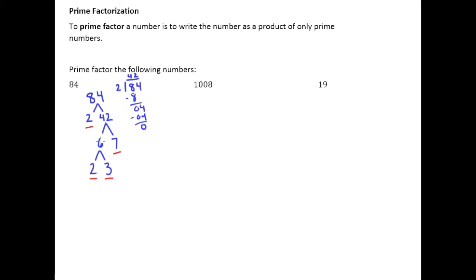And so to prime factor 84 is to write 84 as a product of these prime numbers. So 2 times 2 times 3 times 7. And if you multiply all these prime numbers together that are at the end of this factor tree, you will get 84 back again. Now the way we really want to write this, this is technically correct here, but the better way to write it is to take your 2 times 2 and write it with an exponent. So 2 squared times 3 times 7.